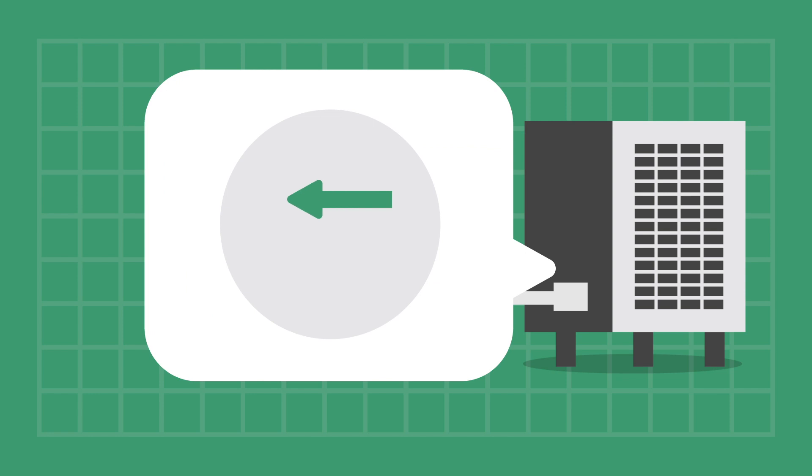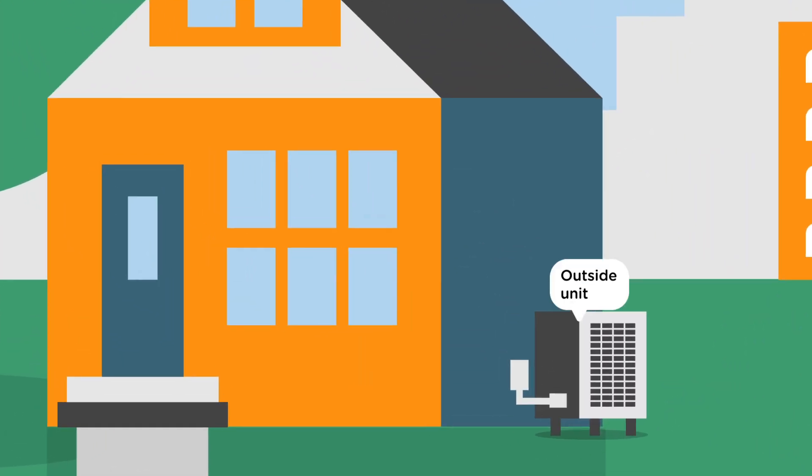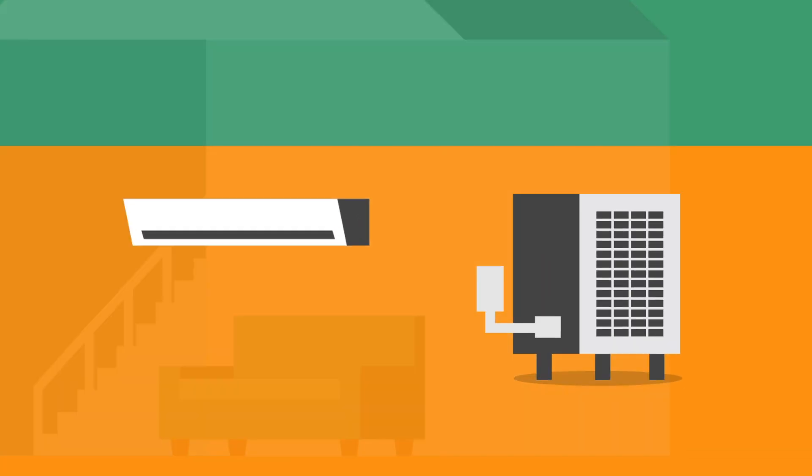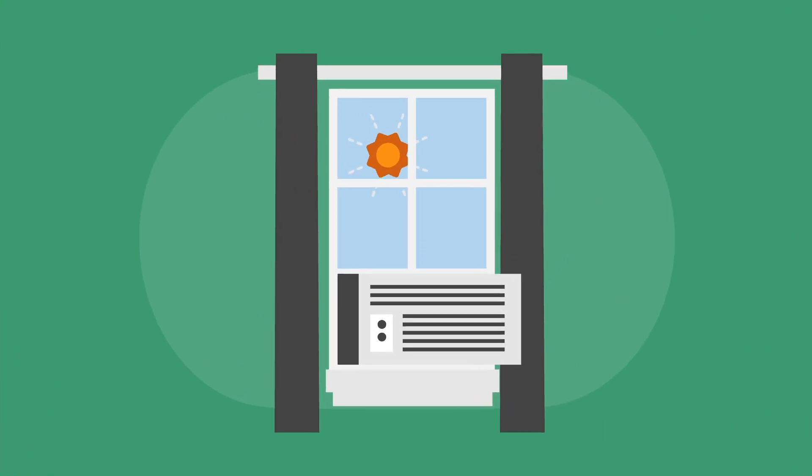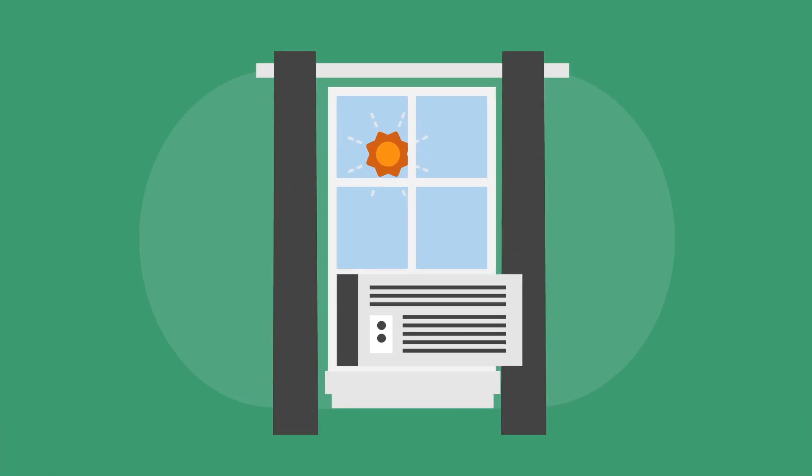A heat pump typically has two components, one outside the house and one inside. The two units transfer heat by using a refrigerant, which is used in the air conditioning units you're probably used to seeing.